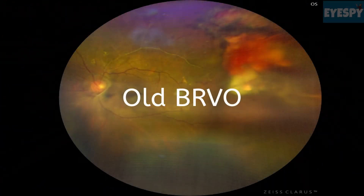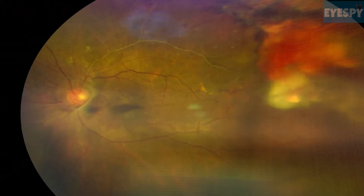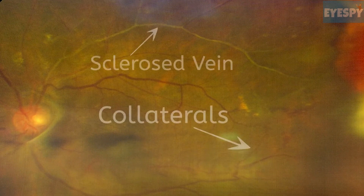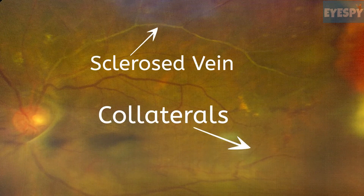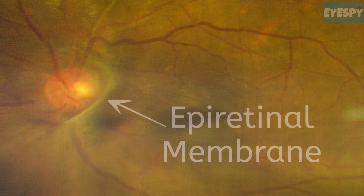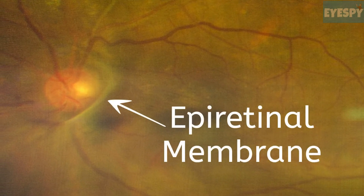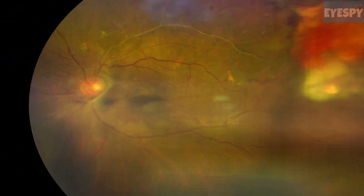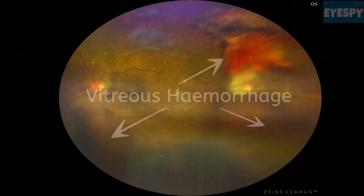Old BRVO is characterized by the presence of sclerosed veins, collaterals, epiretinal membrane, and subhyaloid and vitreous hemorrhage originating from the site of neovascularization.